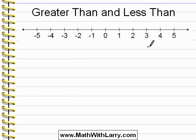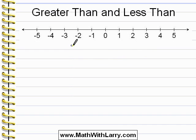For example, 3 is greater than 1 because it's on the right of 1. 3 is also greater than negative 2 because it's on the right of negative 2. Notice that negative 3 is greater than negative 5. Don't just look at the 5 and the 3 — you have to see them both as negative numbers.